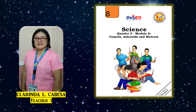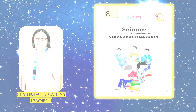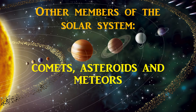Hello, dear learners. How are you today? I will be your guide for your science subject and I am Teacher Clary. This time, we will tackle your Module 6 on the second quarter. This is about the comets, asteroids, and meteors. So, let's fasten our seatbelts and fly in the outer space to discover the other members of the solar system.